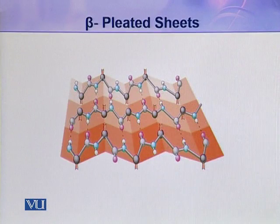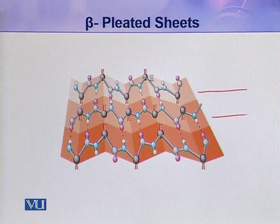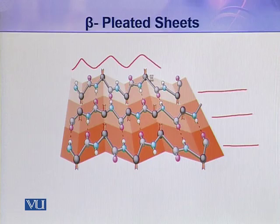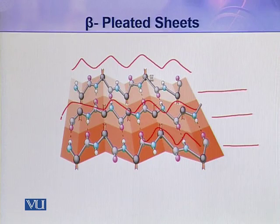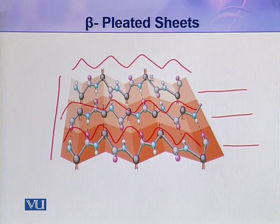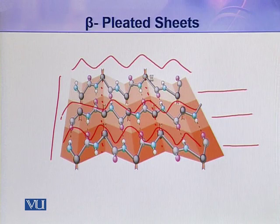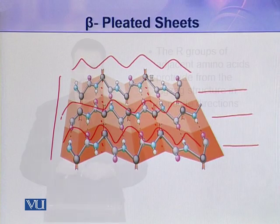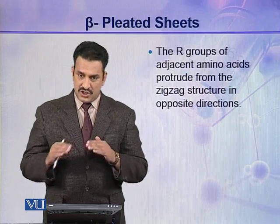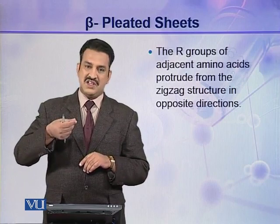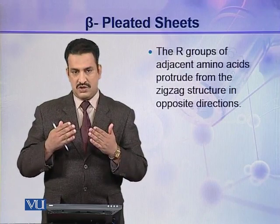Here you can see three polypeptide chains — 1, 2, 3 — arranged in a zigzag manner. When these three zigzag chains arrange side by side, they make a sheet, and in this sheet you can see the pleats. This is called a beta pleated sheet in which the chains are arranged side by side. In this sheet, the R groups in the adjacent amino acids protrude out from the zigzag structure in opposite directions.